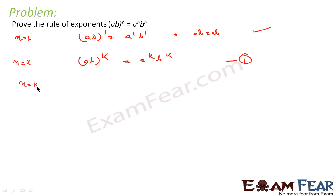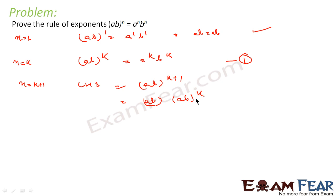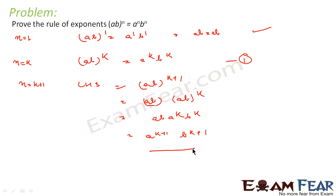Now we have to prove the statement is true for n equal to k plus 1. For n equal to k plus 1, my LHS becomes (ab) to the power k plus 1. I can write this as ab into (ab) to the power k. Replacing (ab) to the power k using equation 1, this becomes ab into a to the power k times b to the power k, which equals a to the power k plus 1 times b to the power k plus 1. This is our RHS, so we have proved the statement is true for k plus 1.